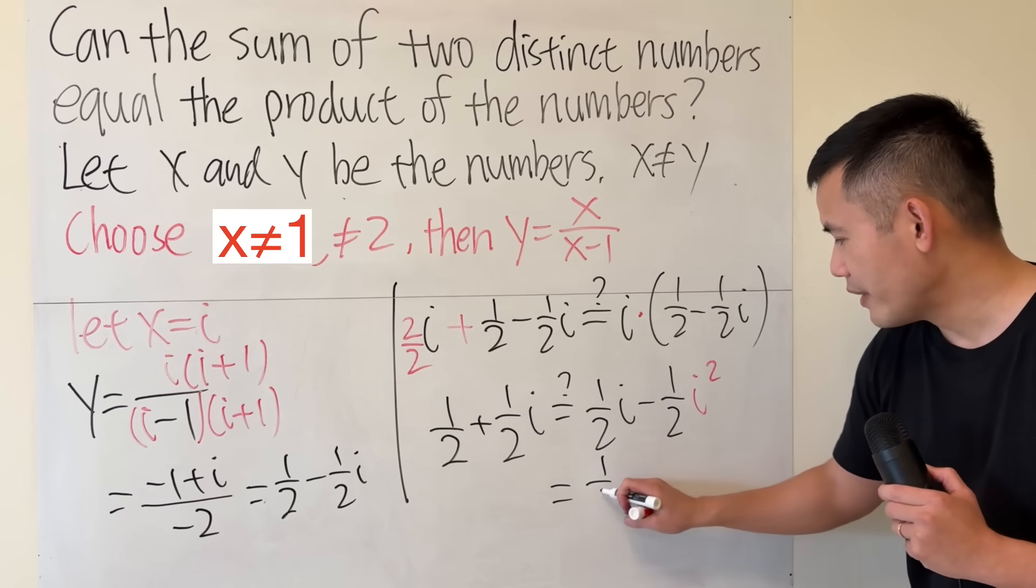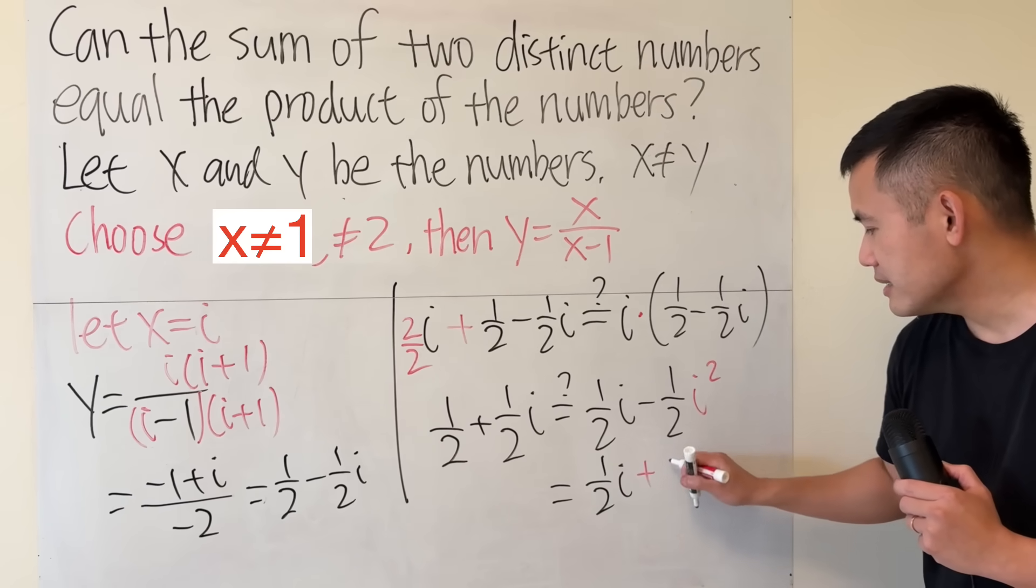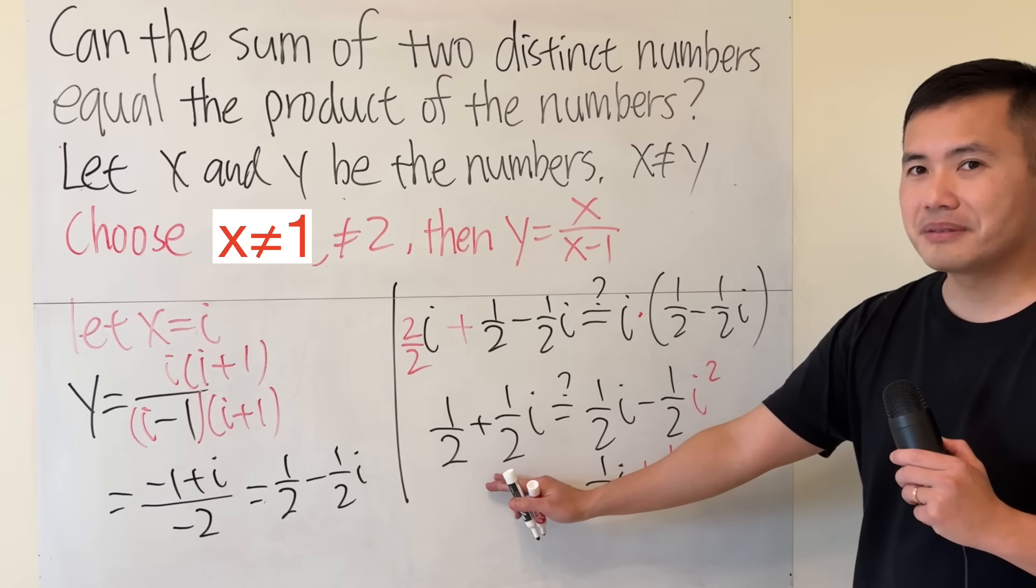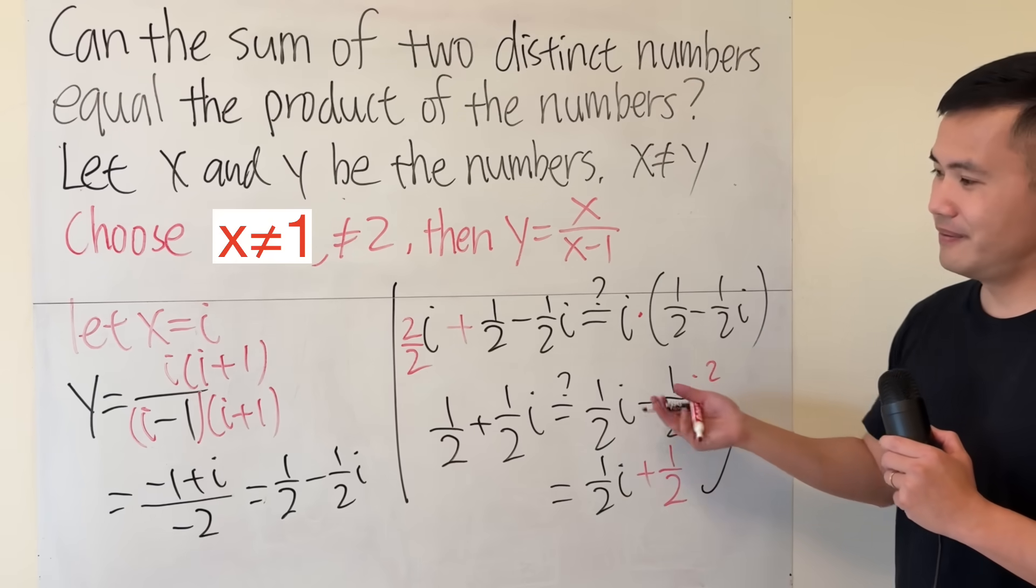So this equals 1 half i plus 1 half, which is the same as that. Done. Very cool, huh?